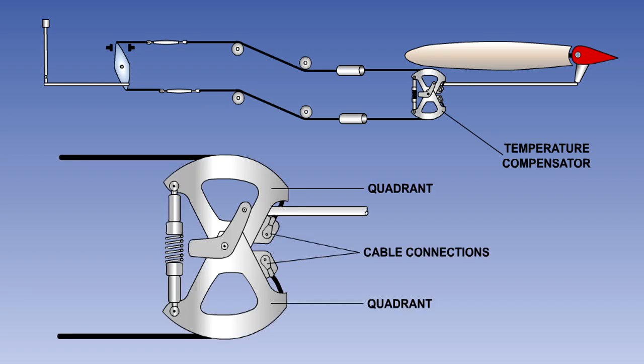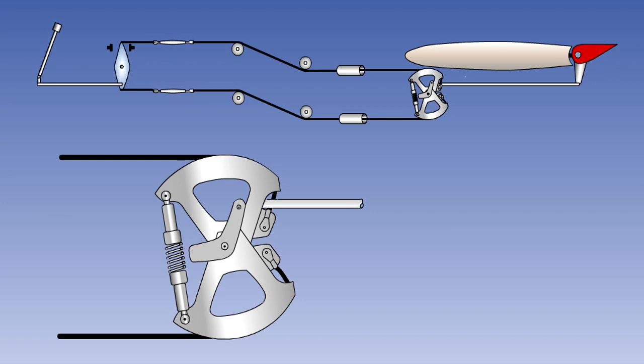In the temperature compensator in this graphic, the cables from the pilot's control are fastened to the two quadrants. The quadrants are free to rotate independently about the central pivot point. However, they are connected together by a strong spring in the damper unit. Movement of the pilot's control operates the cables. They rotate the quadrants equally, moving the push-pull rod and the control surface.